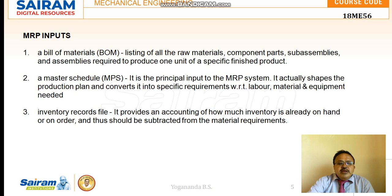The Inventory Record File provides an account of how much inventory is readily available in hand and how much is required for purchase orders to procure raw materials. The materials available in hand are subtracted from the total material requirement, so that the net material requirement is assigned to the purchase order.